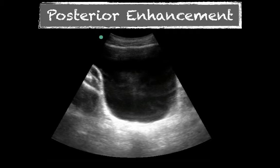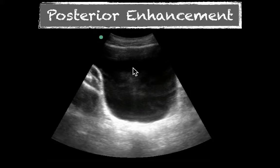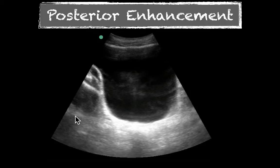Another artifact is posterior enhancement. As an ultrasound wave travels down, it's absorbed, reflected, and scattered — all of those attenuation factors. However, a sound wave traveling through the bladder is unimpeded as it travels through fluid, so the amplitude is never decreasing. As it hits the posterior wall of the bladder, a large amount of that is reflected back to the machine. Because of that large amplitude that returns, it creates this bright or hyperechoic structure. This image does have too much gain on it, but this area is clearly brighter than at the same level elsewhere.